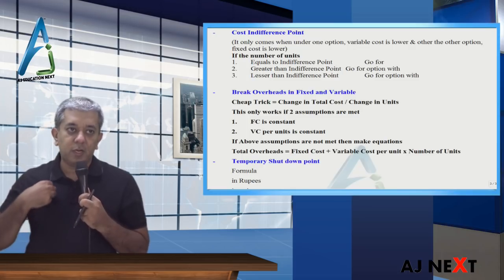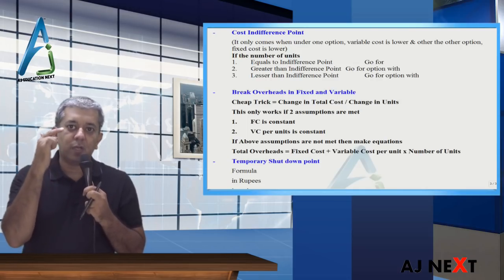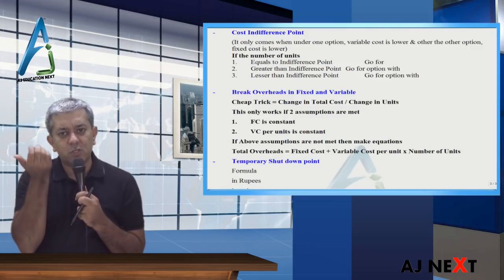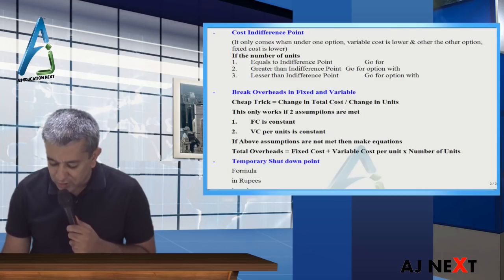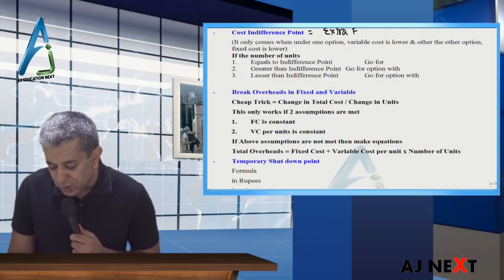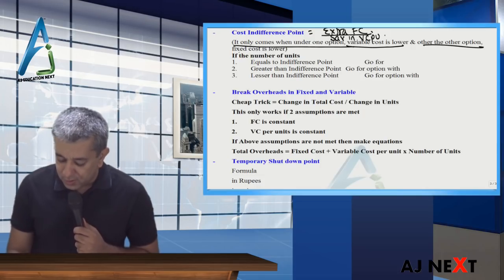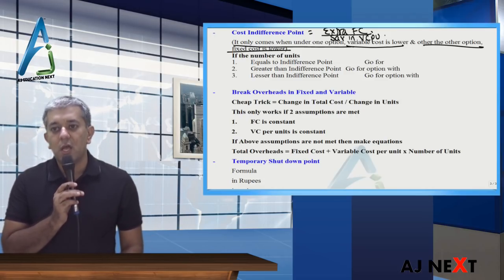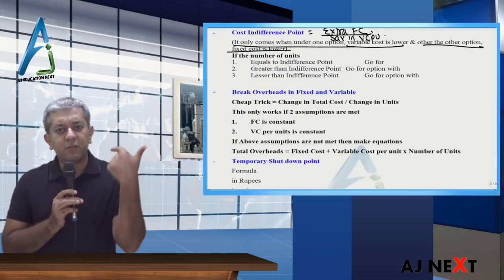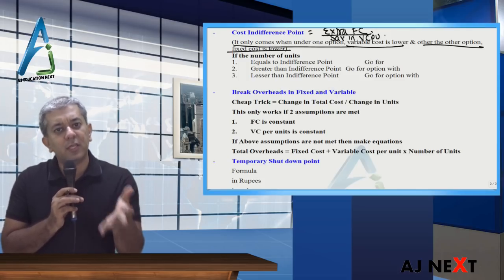Cost indifference point: suppose you have a petrol car with lower fixed cost but higher running/variable cost, and a diesel car with higher fixed cost but lower variable cost. In such cases there is an indifference point where total cost is the same. The formula is: extra fixed cost divided by savings in variable cost per unit. This only applies when one option has lower variable cost and the other has lower fixed cost. If a third option has both lower fixed and variable cost, there will never be an indifference point — it will always be the better option.